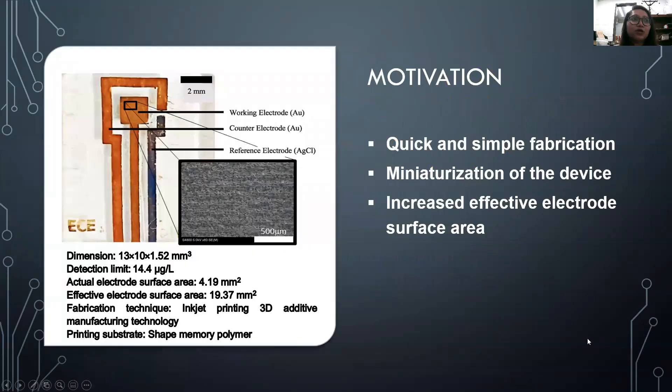Before I start today's talk, I'm presenting here our fabricated gold-based mercury-free electrochemical sensor. The dimension of our fabricated sensor is 13 by 10 by 1.52 millimeter cube. The detection limit is 14.4 microgram per liter.